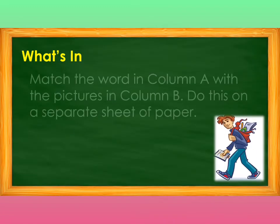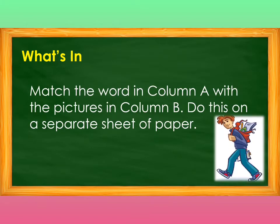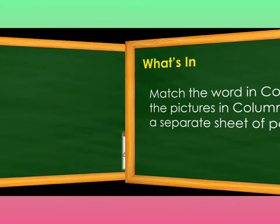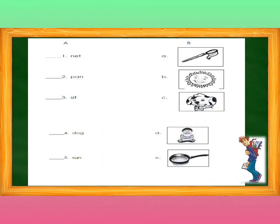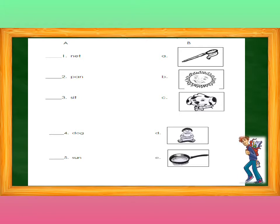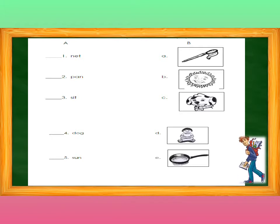Well done! Match the word in Column A with the pictures in Column B. Do this on a separate sheet of paper. These are the words in Column A: number one, net; number two, pun; number three, sit; number four, dog; number five, son; number six, bunch; number seven, since.